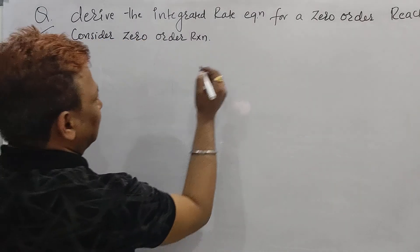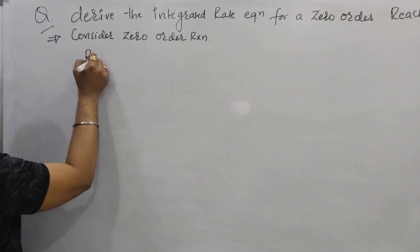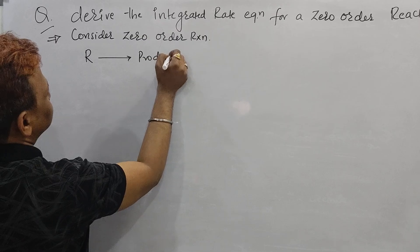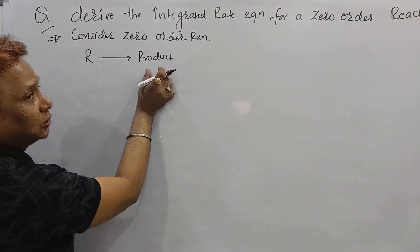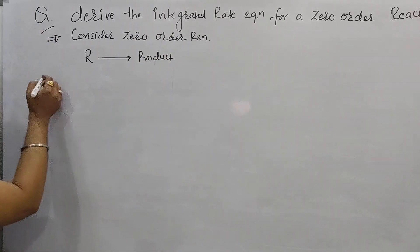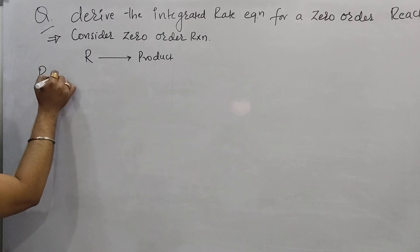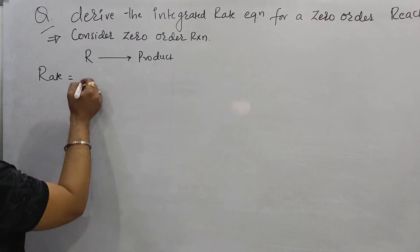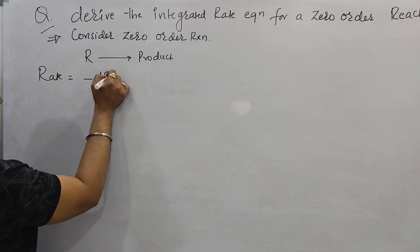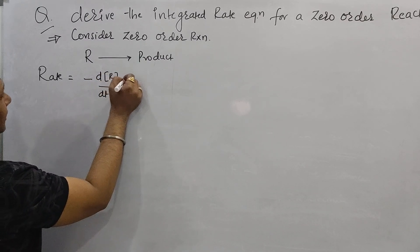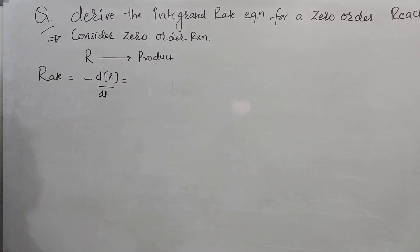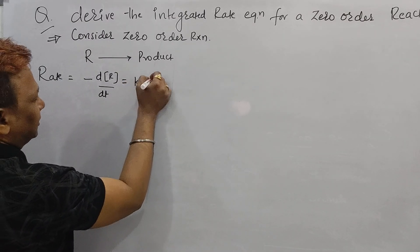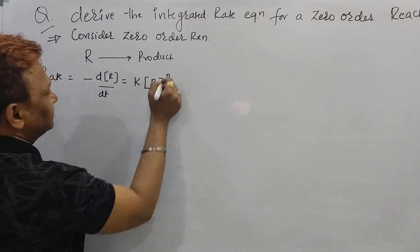Consider the zero order reaction. What is the zero order reaction? Let us consider this: R is a reactant converted into product. For this, write down the rate. Rate means rate of reaction. How to write the rate? It is minus of d[R]/dt, and that is equal to K into concentration of R to the power of 0.